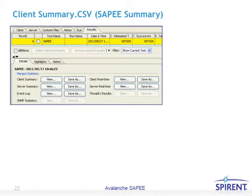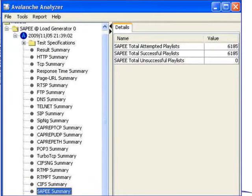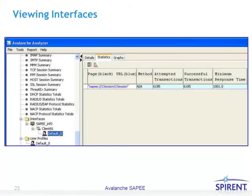The client summary.csv file also provides SAPI information. From the results tab, you would highlight the test you want to view, then click the client summary view button. From here, you can select the SAPI summary, which gives you rolled-up numbers for the total attempted playlists, total successful playlists, as well as total unsuccessful playlists.